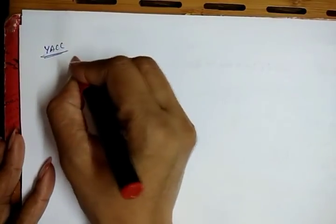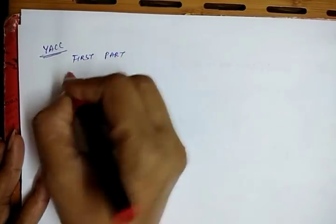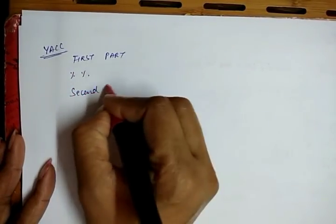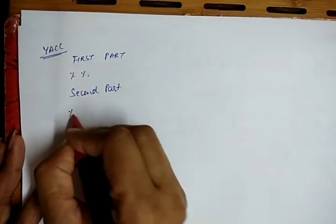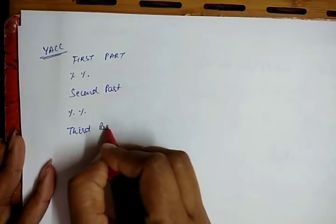Next is the syntax of Yacc. As we know, the input to Yacc is a grammar. The syntax of Yacc again has three sections: the first part, then double percent, the second section, then double percent, and the third part.